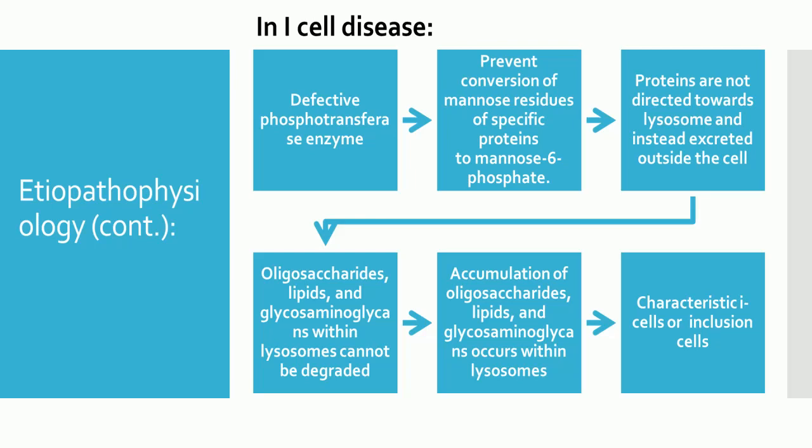This results in a buildup of oligosaccharides, lipids, and glycosaminoglycans within lysosomes, resulting in the characteristic I-cells, or inclusion cells, which can be identified under the microscope. In addition, the defective lysosomal enzymes normally found only within lysosomes are instead found in high concentrations in the blood.